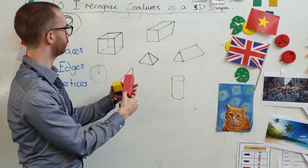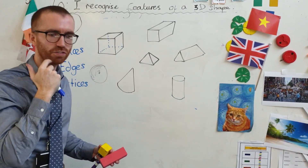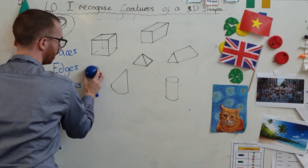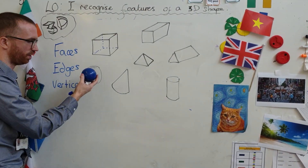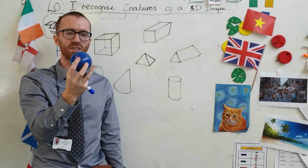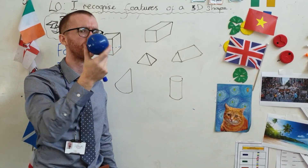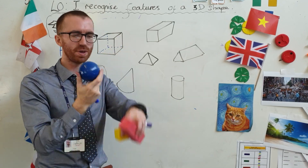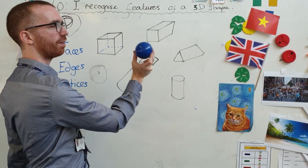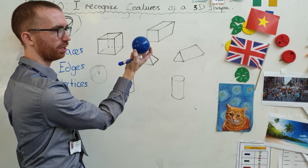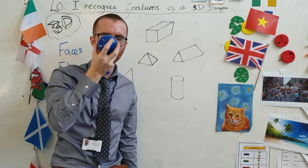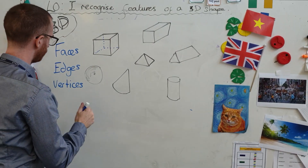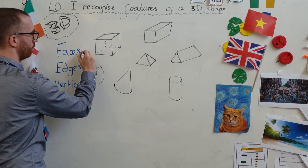Faces are the flat surfaces. If we take the sphere — and this is always an interesting one — people often ask how many faces it has. Well, it's just got the one: one big face all the way around it. Wherever you look at it, it looks exactly the same. So, we understand faces.